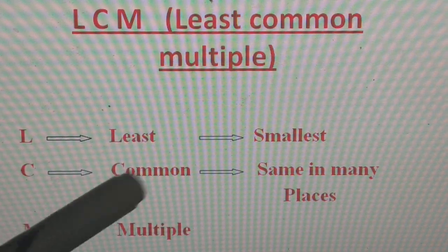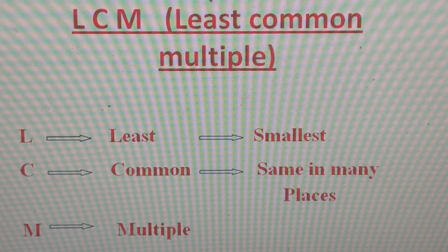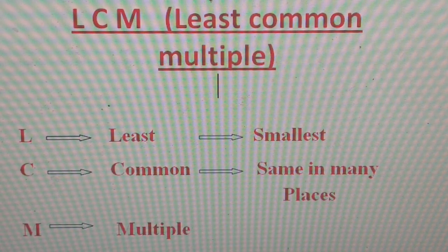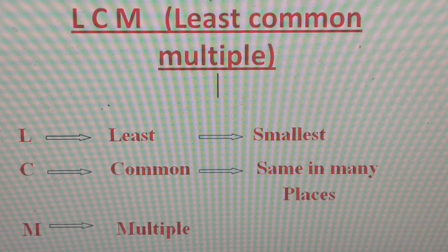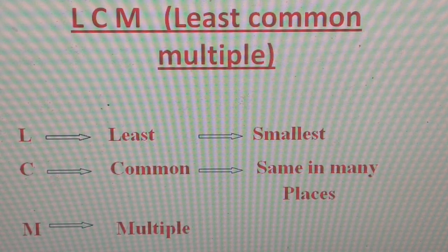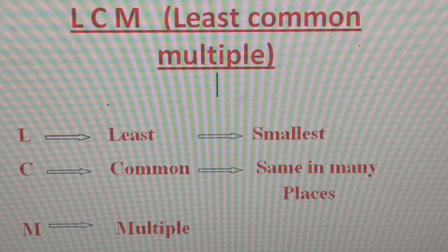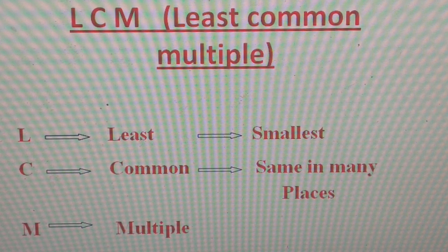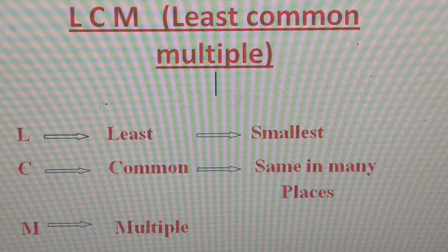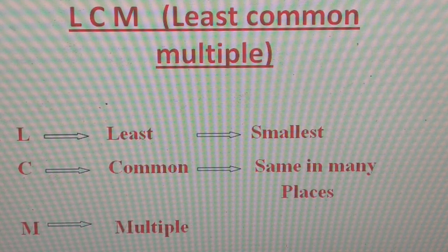L stands for Least — least means smallest. C stands for Common — common means same in many places. For example, all the students of our school are wearing the same kind of school uniform, so our school uniform is common for all. Like this, in your class, all of the students are using the same kind of maths copy — small square maths copy — so maths copy is common for you all.